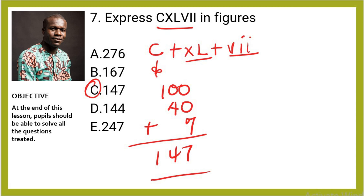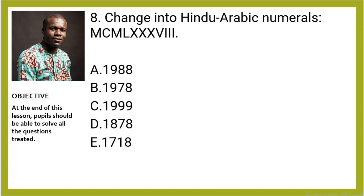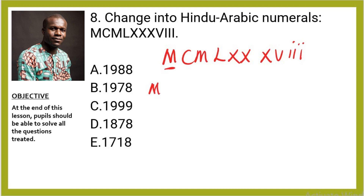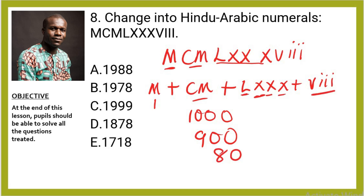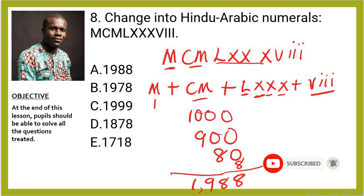Question 9 (Roman numerals): Change MCMLXXXVIII into Hindu-Arabic numerals. Break it up: M + CM + LXXX + VIII. M is 1,000, CM is 900, LXXX is 80 (50+10+10+10), VIII is 8. Adding up: 1,000 + 900 + 80 + 8 = 1,988. The right answer is option A.